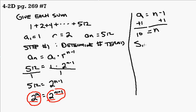So we're going to use the 10th partial sum for a geometric series. S sub n is equal to a sub 1 times 1 minus r raised to the n power all over 1 minus r.